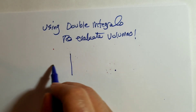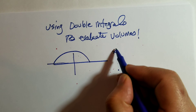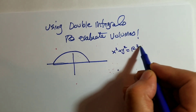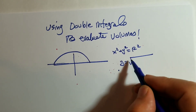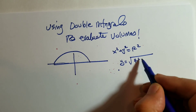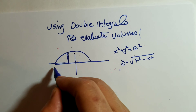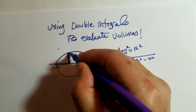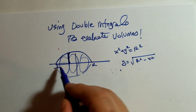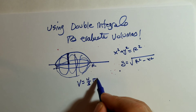Remember in Calculus 2, we took a semicircle — x squared plus y squared equal to r squared — and solved for y, which was the square root of r squared minus x squared. We used the disk method from negative r to r, revolving that semicircle along the x-axis, to find the formula for the volume of a sphere: four-thirds pi r cubed.